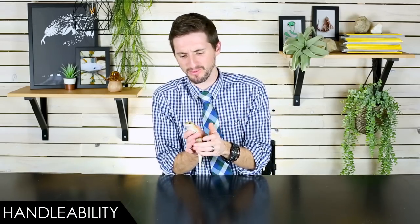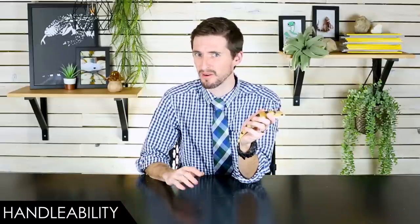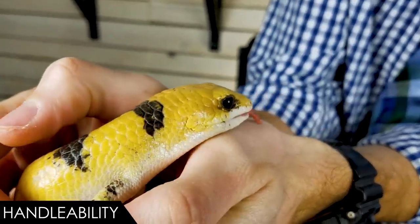When it comes to handleability, we give the Peters Banded Skink a score of 5 out of 5. Most of them are really good with handling, which is totally unexpected because almost all of these lizards are wild caught. It's not like they're raised up with humans around them, but pretty much all of them come into captivity and they're just really chill, and that's spectacular. They're a robust good sized lizard, tough enough that they're not going to be easily damaged, yet small enough that they're pretty easy to take care of and easy to handle.